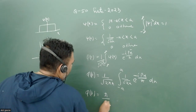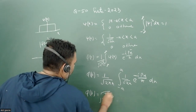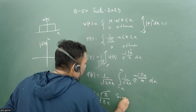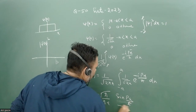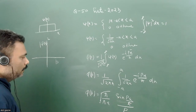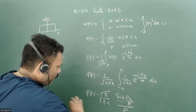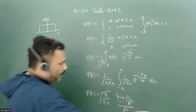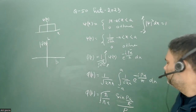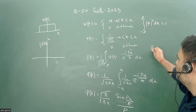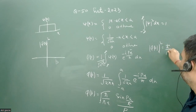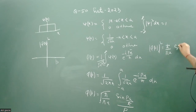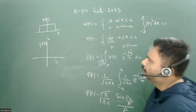When you do this integration, φ(p) comes out as √(ℏ/(πa)) times sin(pa/ℏ) divided by p. So φ(p) is proportional to sin(pa/ℏ)/p, and p goes from minus infinity to plus infinity. Taking the mod square, |φ(p)|² equals (ℏ/(πa)) times sin²(pa/ℏ)/p².